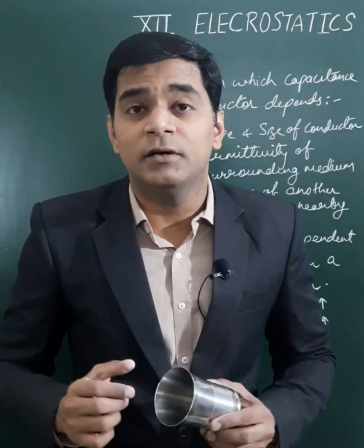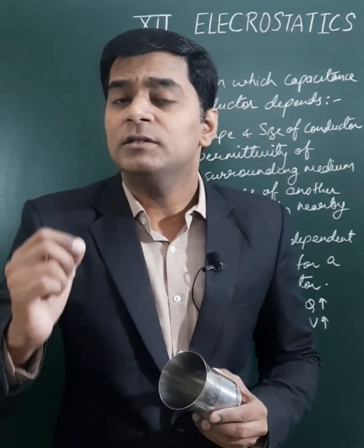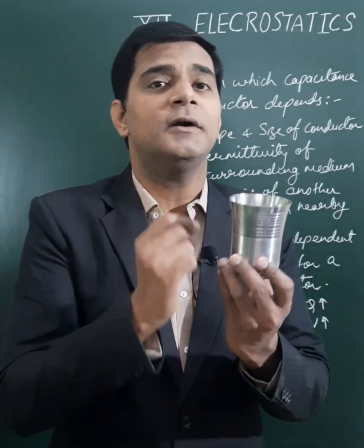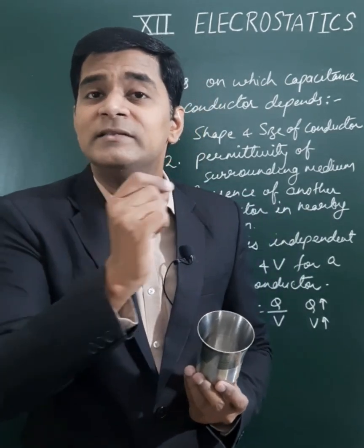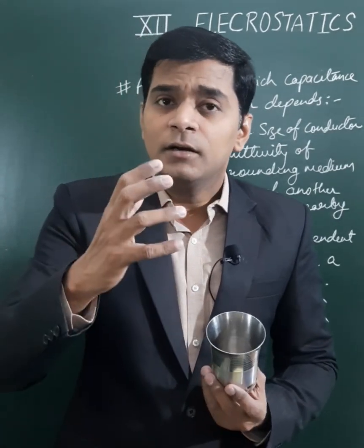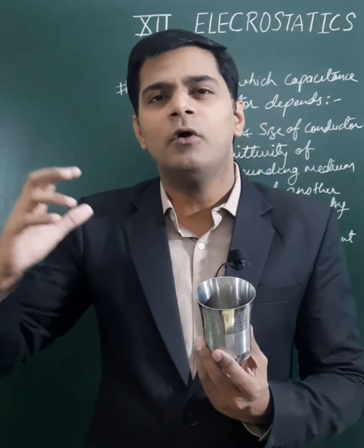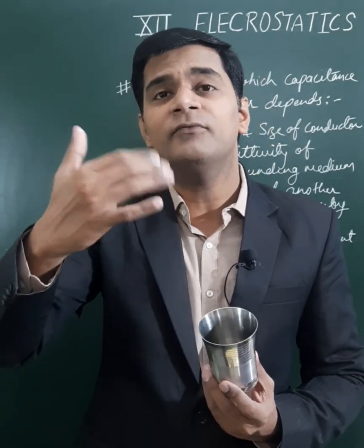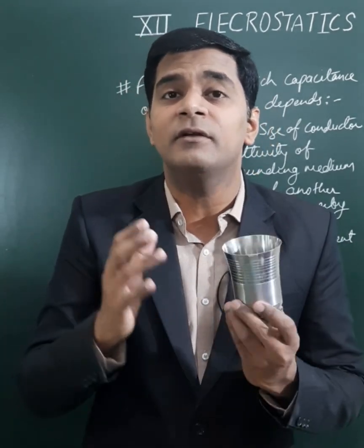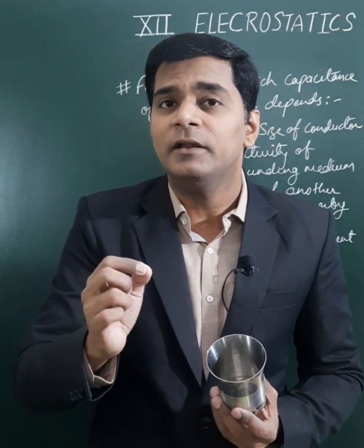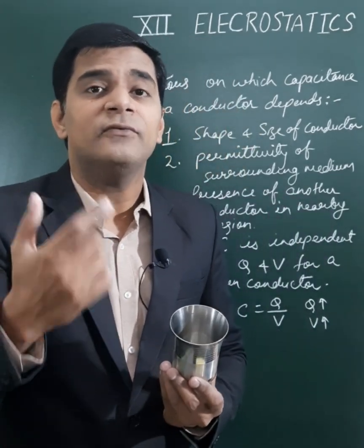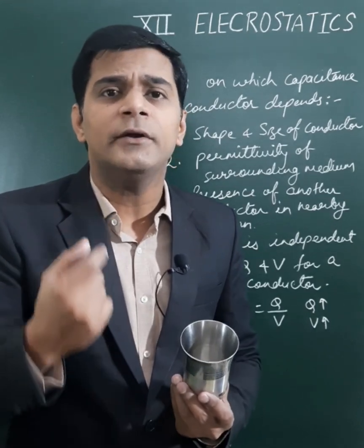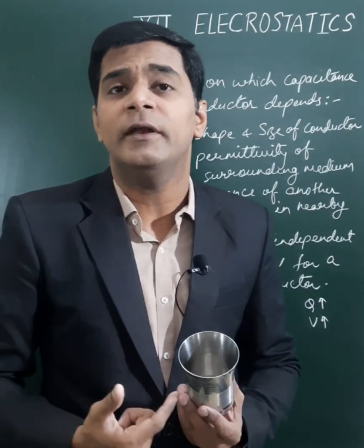The first factor on which the capacitance of a conductor depends is the shape and size of the conductor. The conductor may be spherical, cylindrical, or of any irregular shape — all different shapes have different capacitances. Similarly, size also matters; for a spherical conductor, capacitance is proportional to the radius of that sphere.